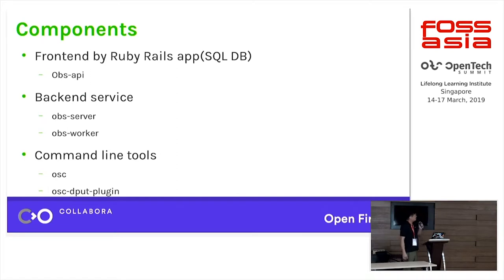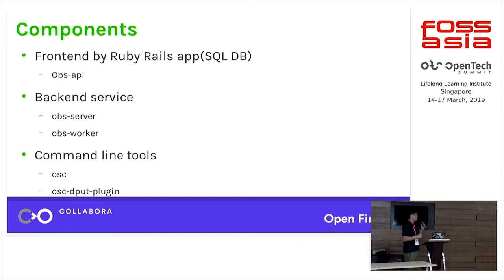Let me explain the components. I put multiple images in this infrastructure: the front end is a Ruby on Rails app with a database, called the obs-api image in the repository. The backend service is the obs-server image. The obs-worker is the builder — if you want to build for different architectures you need a different architecture worker, but there's a Dockerfile there so it's easy to add more workers for your architecture needs. For those who don't like uploading packages via the web front end, there's the command-line tool 'osc' and the osc-debplugin.